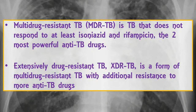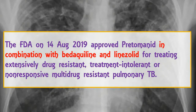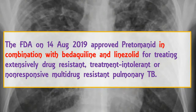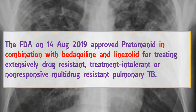The US Food and Drug Administration on August 14, 2019 approved pretomanid, in combination with bedaquiline and linezolid, for treating a limited and specific population of adult patients with extensively drug-resistant, treatment-intolerant, or non-responsive multi-drug resistant pulmonary TB. Pretomanid is an antibacterial drug of the nitroimidazole class, developed and clinically evaluated by TB Alliance, a not-for-profit product development partnership dedicated to the discovery and development of new, faster-acting, and affordable medicines for tuberculosis.